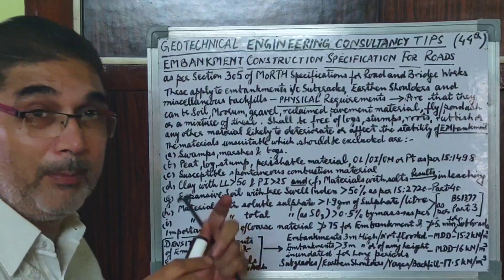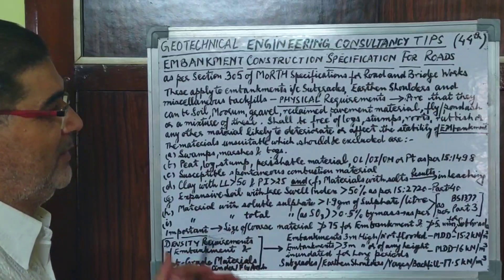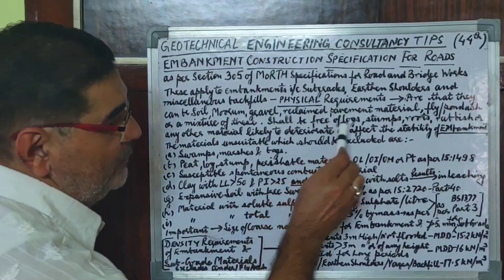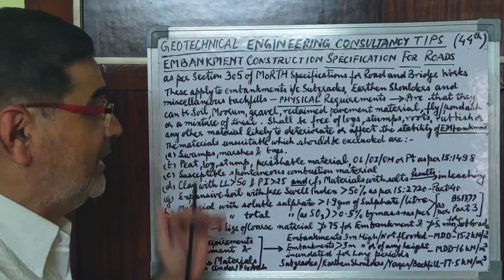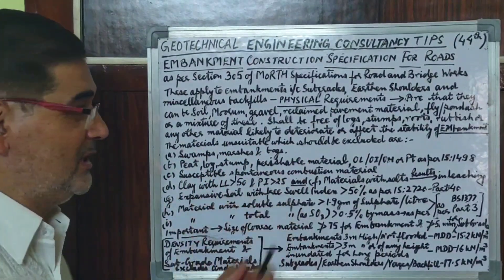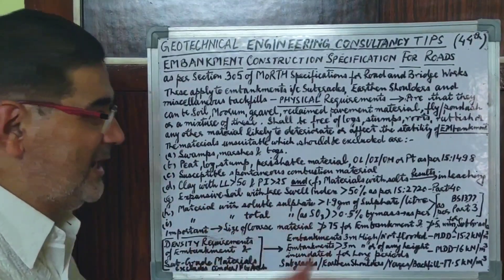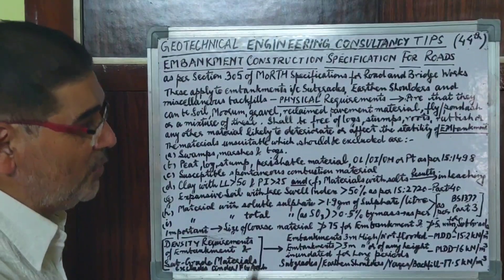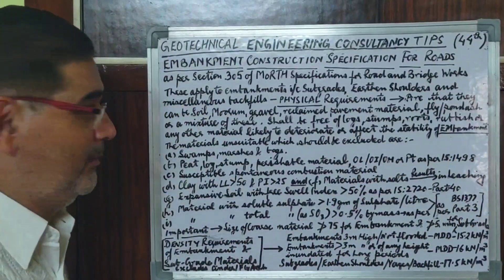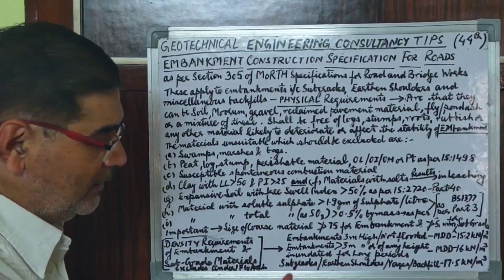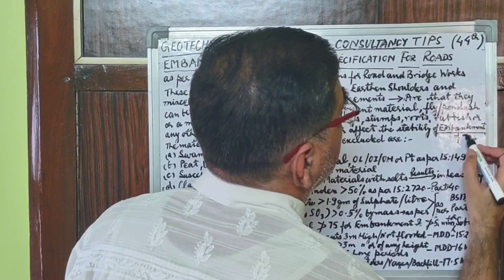All these materials shall be free of logs, stumps, roots, rubbish, or any other material likely to deteriorate during its lifetime, which in turn may create any cavity or subsidence of the roads, or sliding of the road embankments — in order to protect the stability of the proposed road embankment.